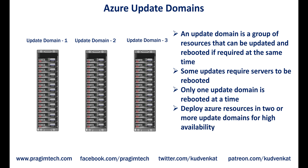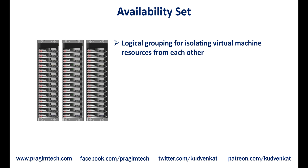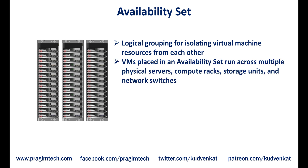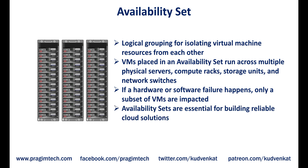So if you want your Azure resources like virtual machines to be available even during the update process, have them deployed across multiple update domains. Now, what is an availability set? An availability set is a logical grouping for isolating virtual machine resources from each other. Azure makes sure that the VMs we place in an availability set run across multiple physical servers, computer racks, storage units, and network switches. So if a hardware or software failure happens, only a subset of our VMs are impacted and our overall solution still stays operational. Availability sets are essential for building reliable cloud solutions.